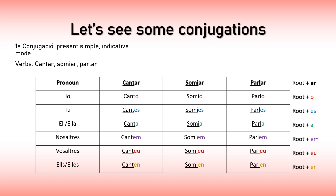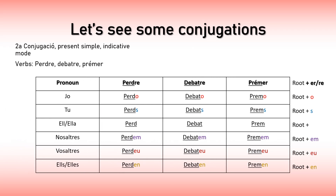Moving on to the second conjugation: even though I said it has many irregular verbs, it also has regular verbs, and these are examples of them. It's the same principle — you have the root that is easily identifiable from the infinitive, and then you add a different suffix to the root each time you conjugate it. If you learn this, you can apply it to the rest of the verbs.